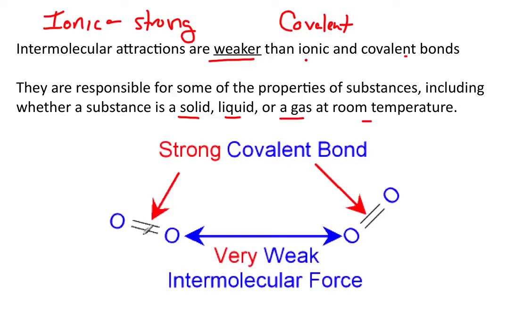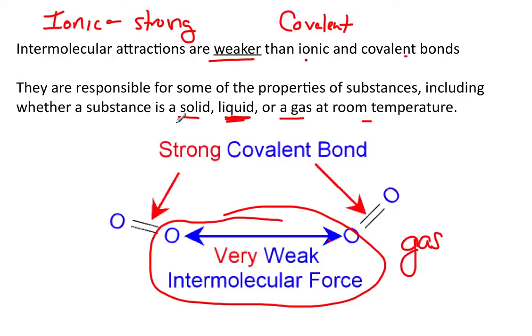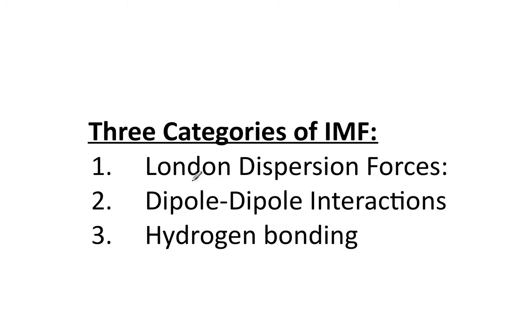So real quick, strong forces over here between these two oxygens, same thing here, stronger covalent bond, compared to the very weak force between these two molecules. But this force does exist, and because this is a weak force, it makes oxygen a gas at room temp. If this force was a little bit stronger between these two, it would make it a liquid. And if it was even stronger, it'll make it a solid, which we'll see in a minute.